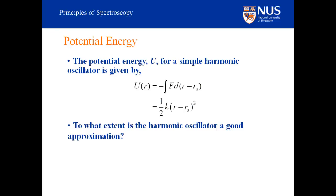The harmonic oscillator is a good approximation but not a perfect model. We cannot continue to compress the molecule indefinitely — the nuclei would hit each other. The model also doesn't allow the bond to break during stretching; in fact, it allows nuclei to pass through each other. So there is something wrong with the model, but it is a good approximation for small displacements. The question is whether the vibrational displacements of a molecule are small enough for this model to work.